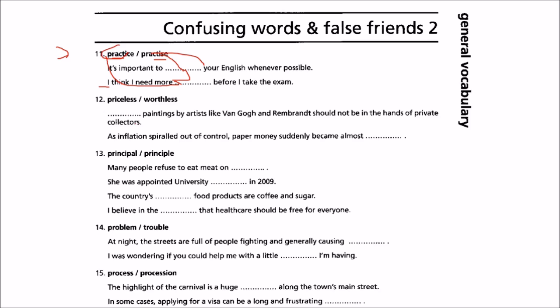Priceless and worthless: paintings by artists like Van Gogh and Rembrandt should not be in the hands of private collectors — we are talking about paintings which are priceless. And when inflation spiraled out of control, paper money suddenly became almost worthless — they became useless.